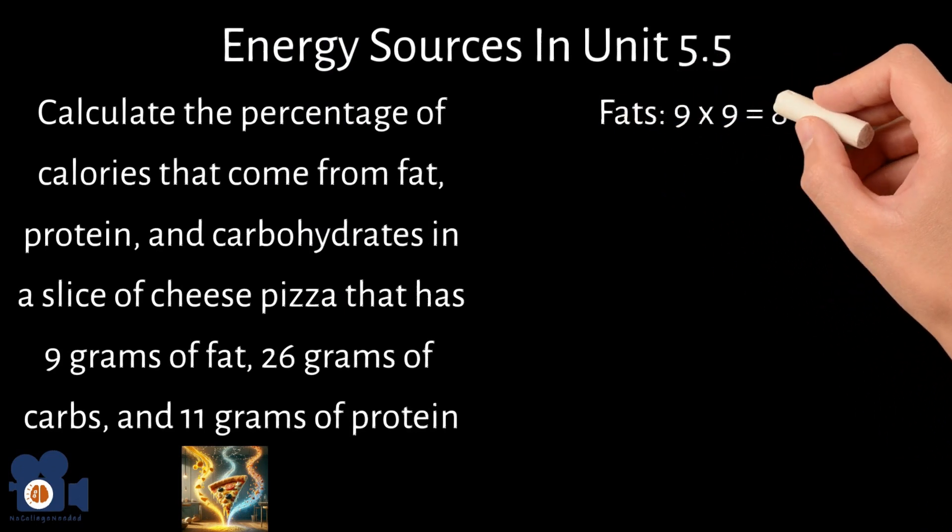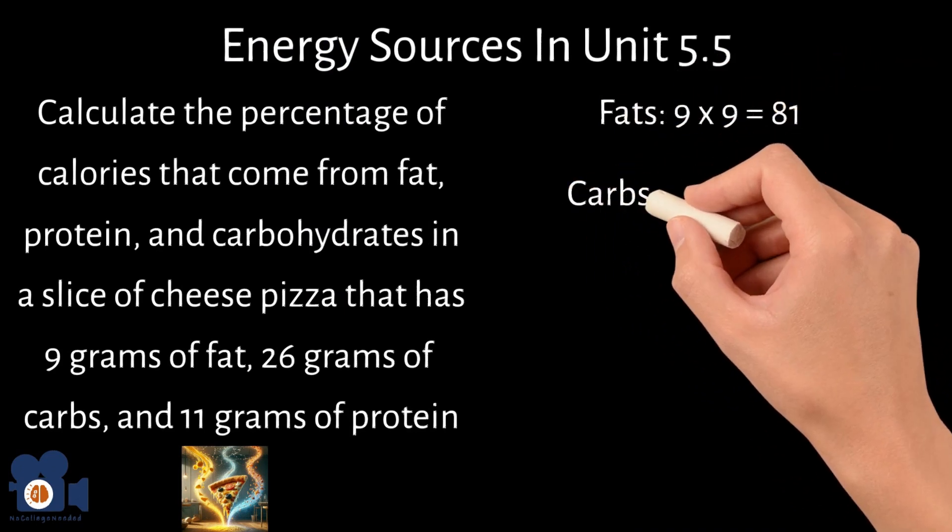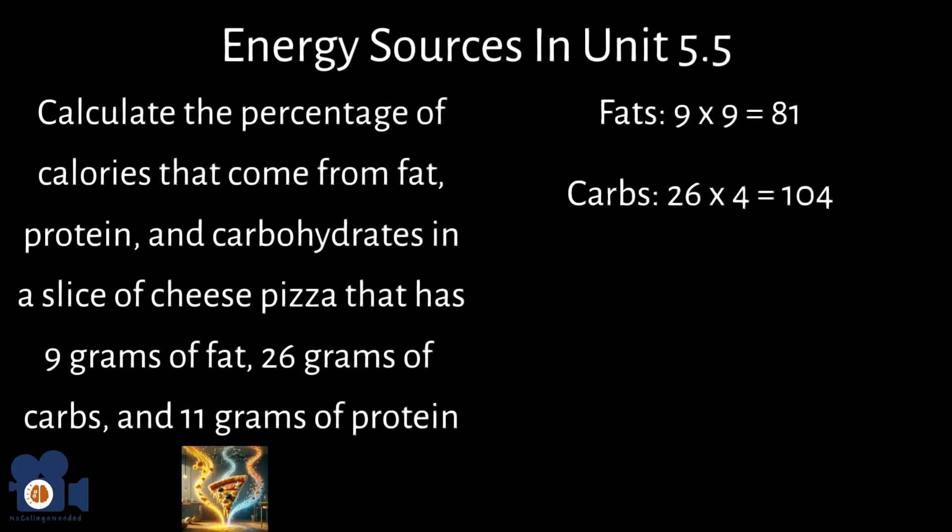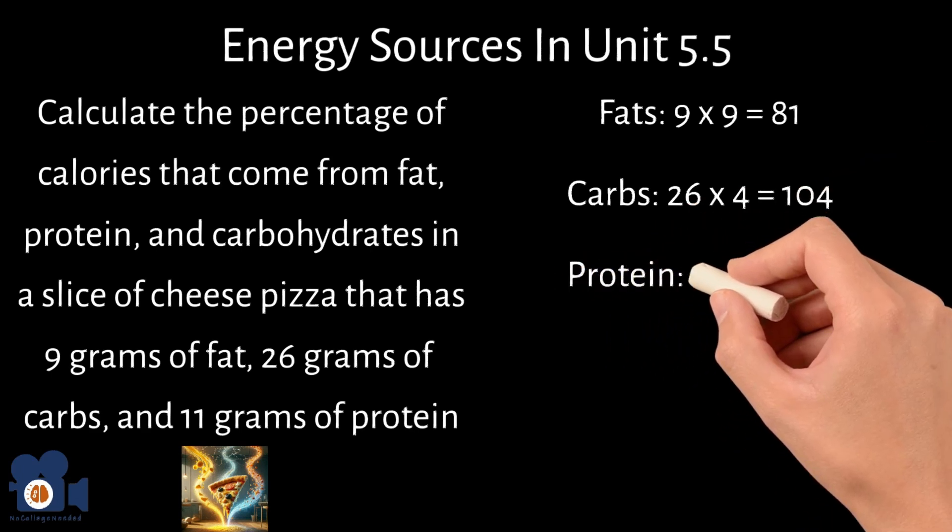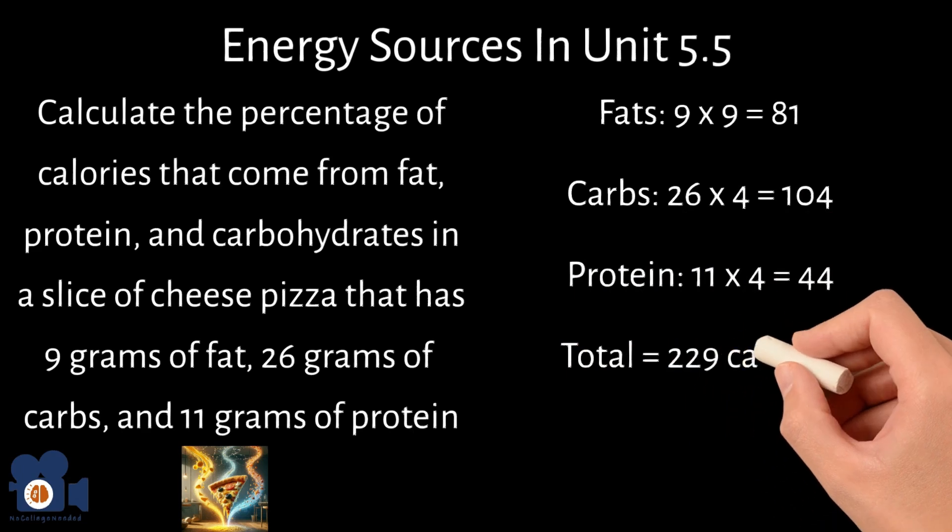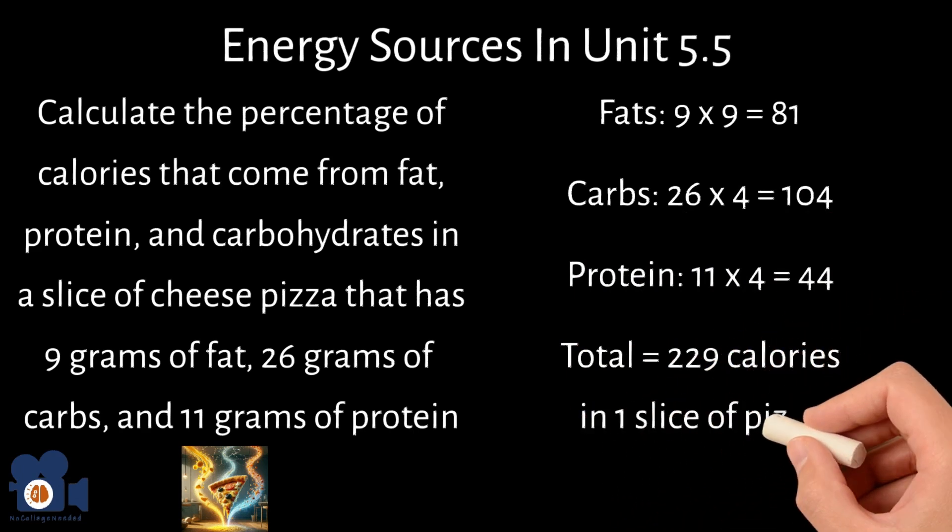Unit 5.5, fats is 9 times 9 equals 81 calories, carbs 26 times 4 equals 104 calories, protein 11 times 4 equals 44 calories, and the total is 229 calories in one slice of pizza.